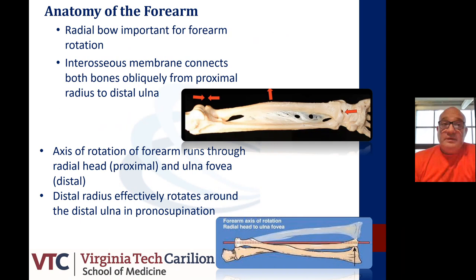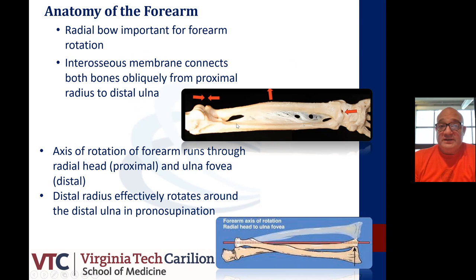The radial bow is important for forearm rotation, as well as the interosseous membrane, as it connects both bones obliquely from proximal radius to distal ulna. We see shearing forces from the wrist translating proximally not only in a longitudinal plane but also in a transverse plane. The axis of rotational forearm movement runs through the radial head proximally and the ulnar fovea distally, in an oblique line. The distal radius effectively rotates around the distal ulna to provide pronation and supination.